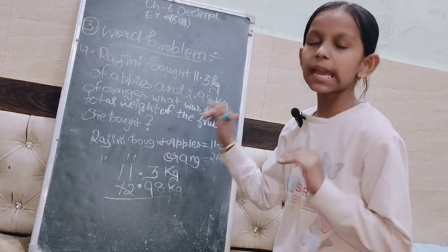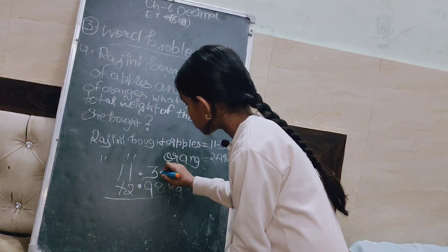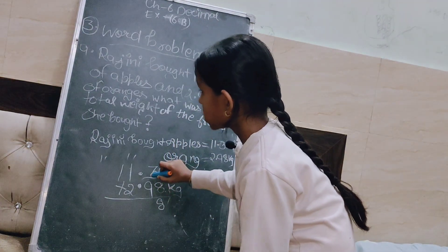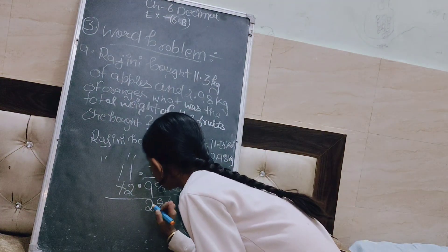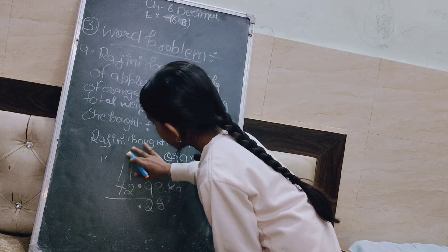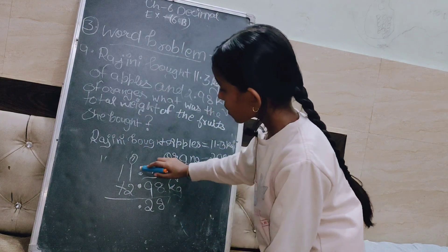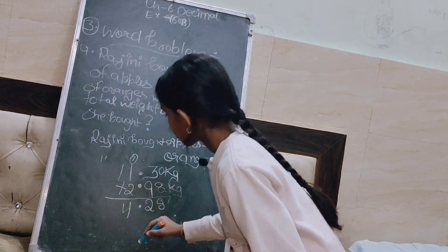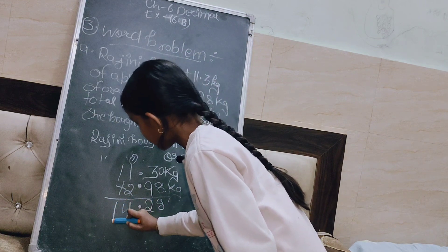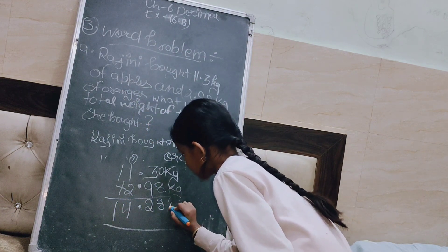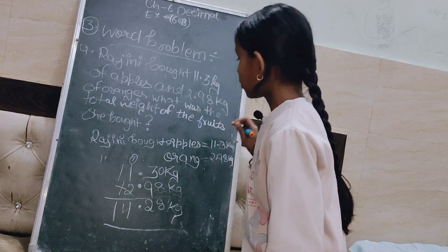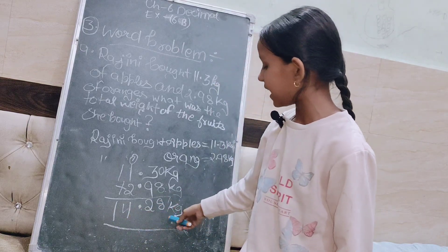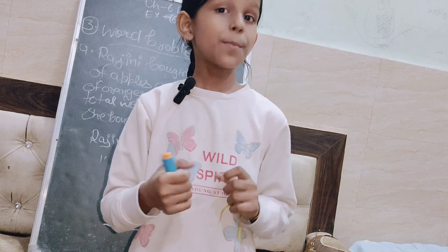अब हमने यह sum लिख लिया, अब हम इसे solve करते हैं। 8 के ऊपर कुछ भी नहीं है, तो फिर हम 8 लिखेंगे। And then 9 plus 3 = 12, decimal, and then ऊपर 1 carrying। 2 plus 1 = 3, 3 plus 1 = 4, and 1 के नीचे कुछ नहीं तो यहाँ पर simple 1। और last में kg important। तो इसने total जो apple and oranges का weight है वो है 14.28 kg।